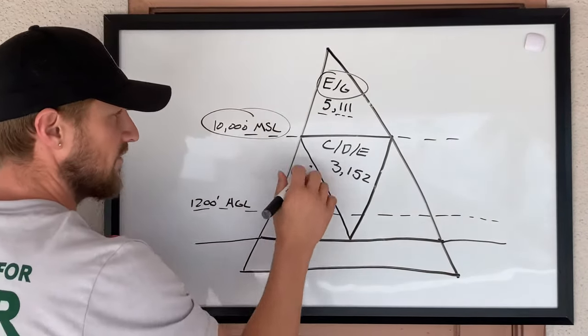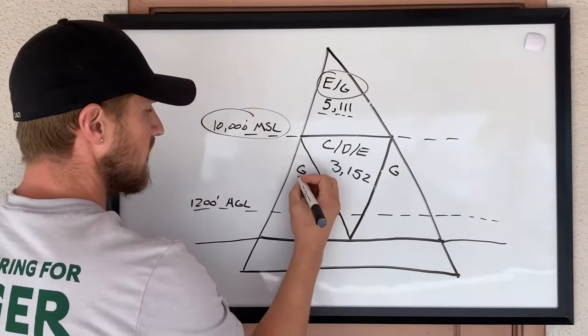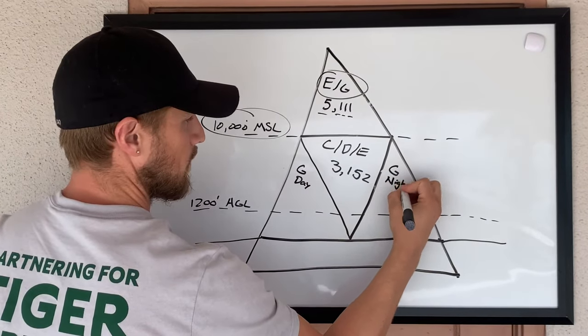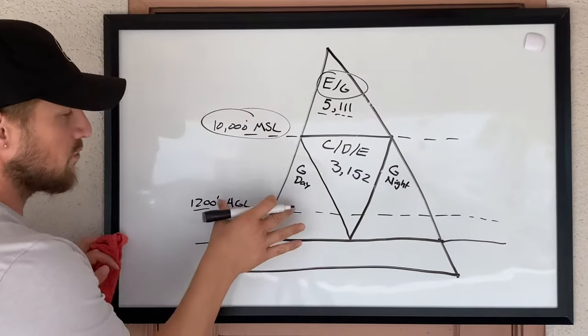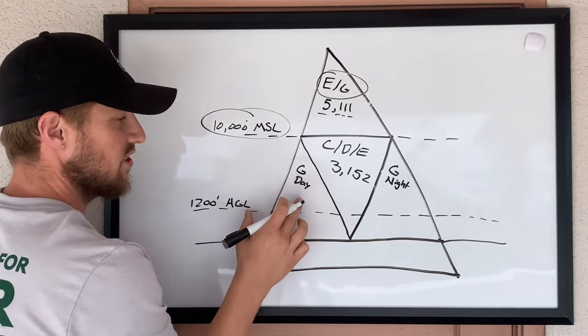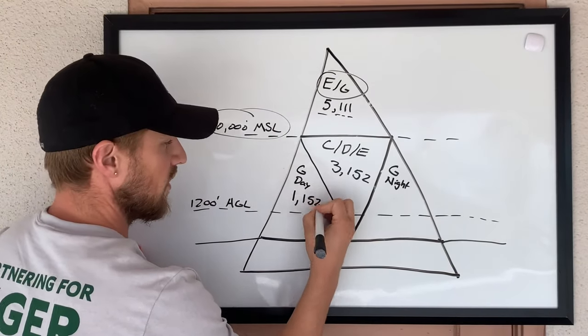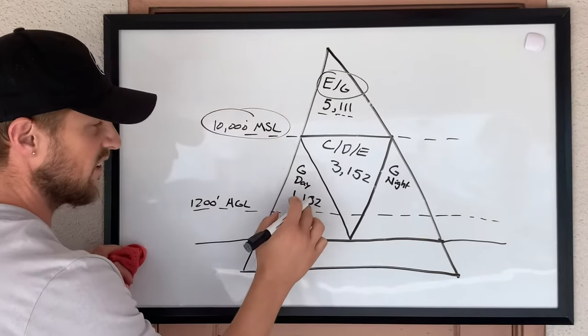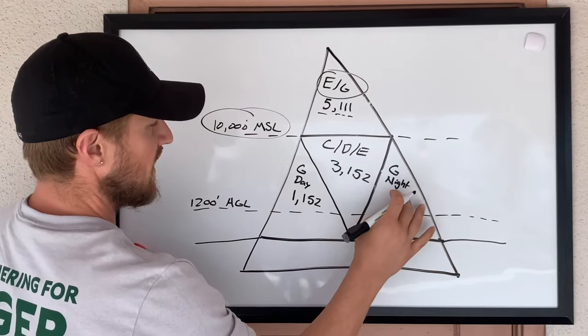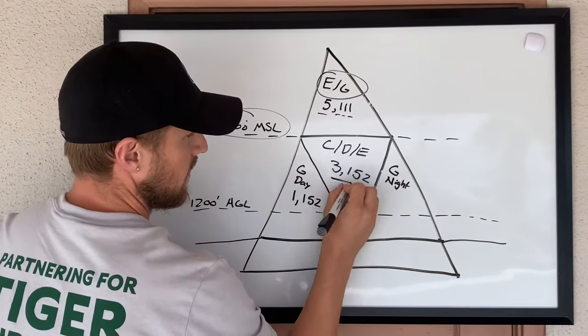Next, the two triangles to the left and right of our middle triangle is going to be both Class Golf. One is going to be day and one is going to be night. When you're above 1,200 feet AGL but below 10,000 feet MSL in Class G during the day, VFR weather minimums are one statute mile and 1-5-2 again, so that's a thousand feet above, 500 feet below, 2,000 feet horizontal. When you're in Class G at night above 1,200 feet AGL but below 10,000 feet, it's going to be the same as here, 3-1-5-2.